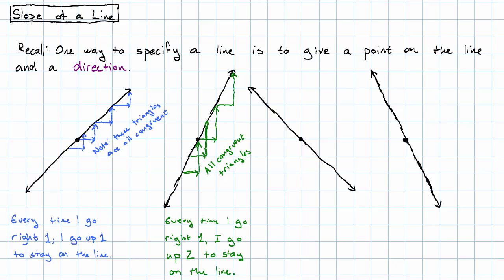On this line, when I go right one unit, I don't go upward to stay on the line — I go down to stay on the line. It doesn't matter where I start from; if I go right one unit, I have to go down one unit. And finally, on this last line, every time I go right one unit, I have to go down two units to stay on the line.